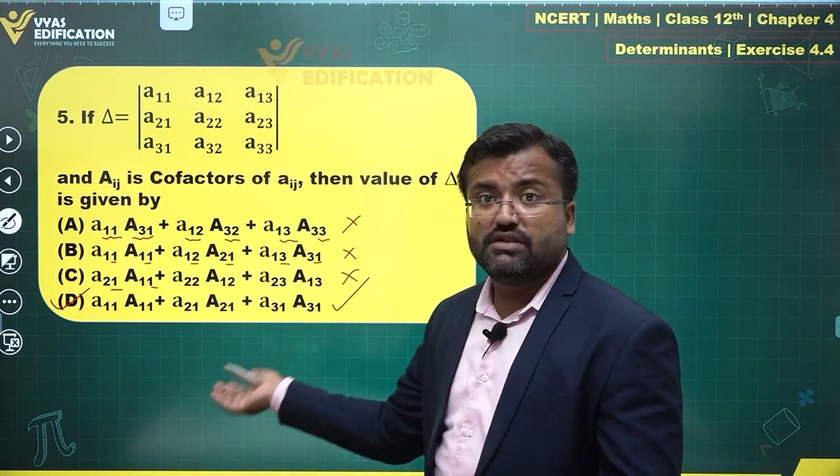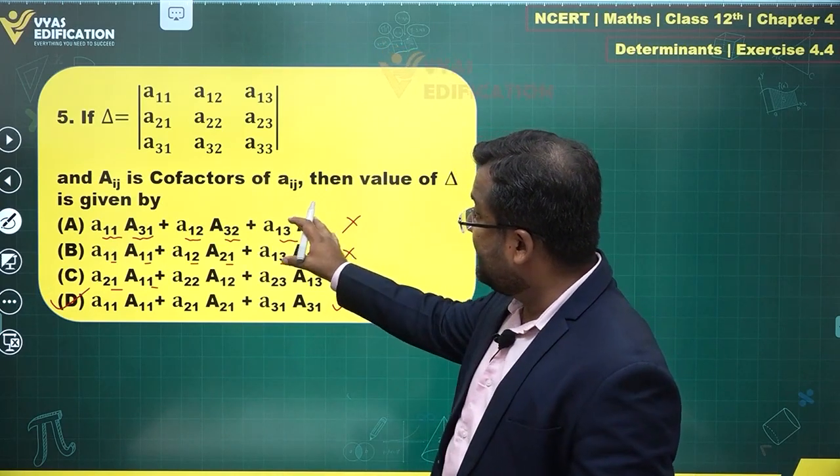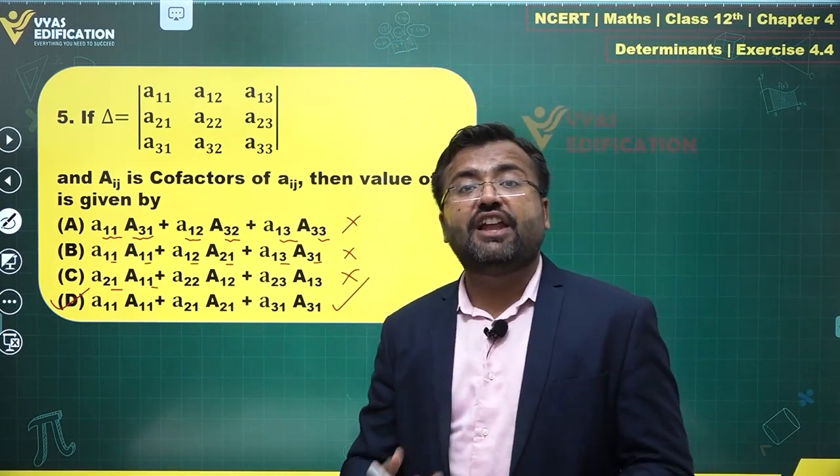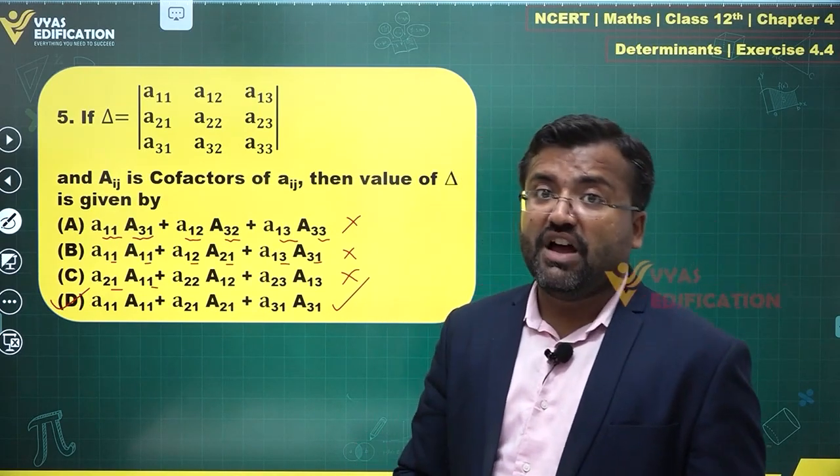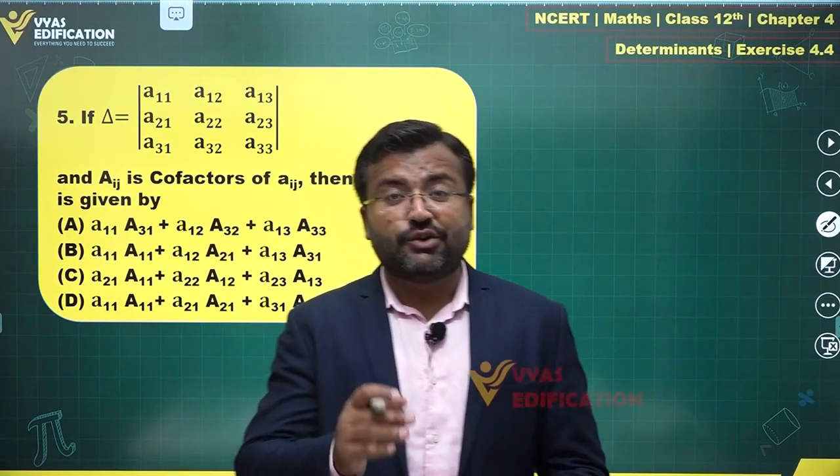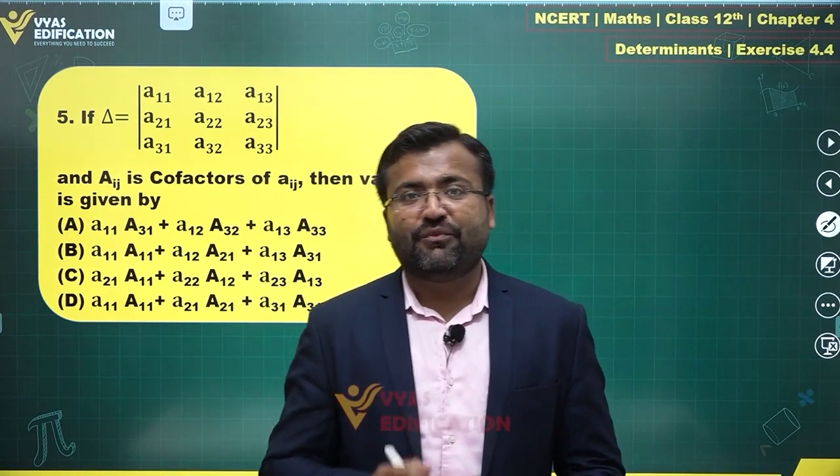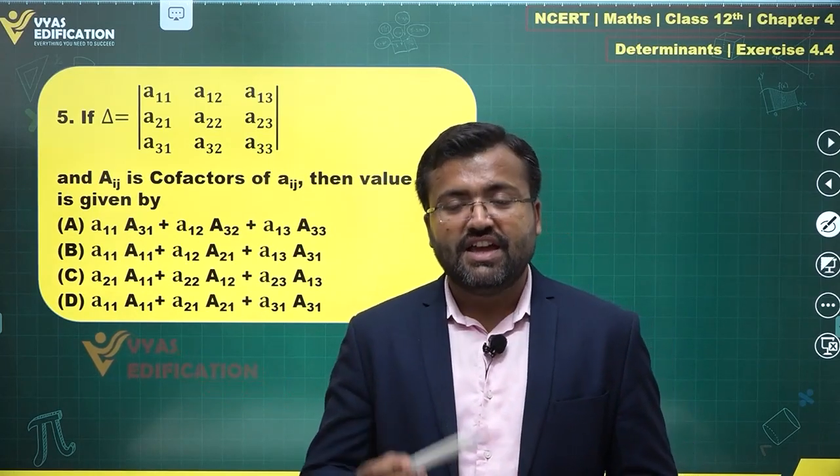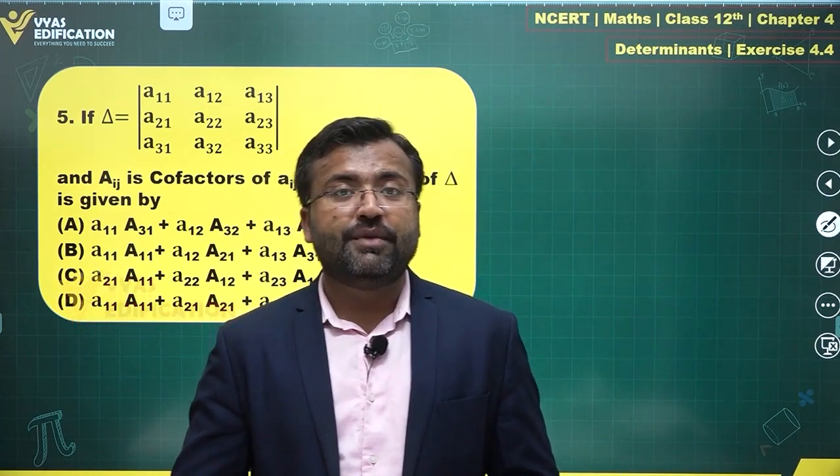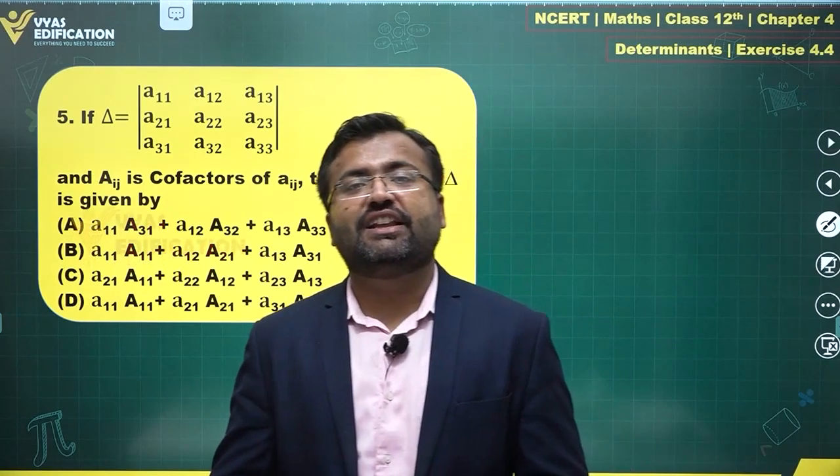That's all about this particular result related to finding the value of a determinant - something which is very useful and you should be aware of very well. With this, we come to the conclusion of this exercise from Determinants, Chapter 4 of NCERT Class 12th. We have discussed Exercise 4.4 based on minors and cofactors.